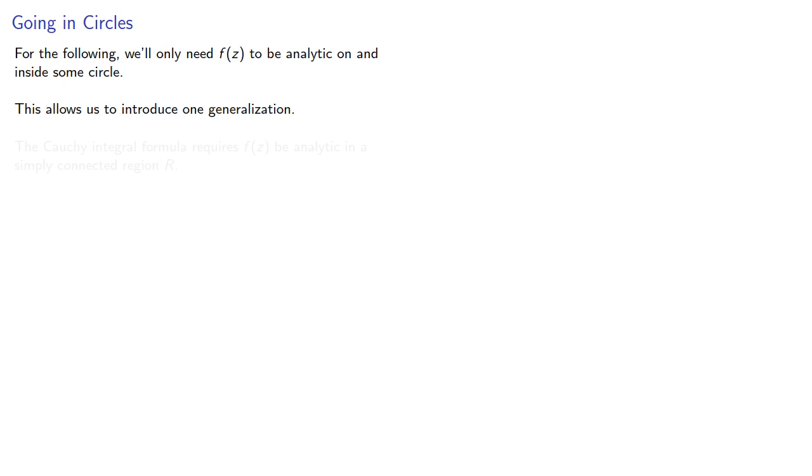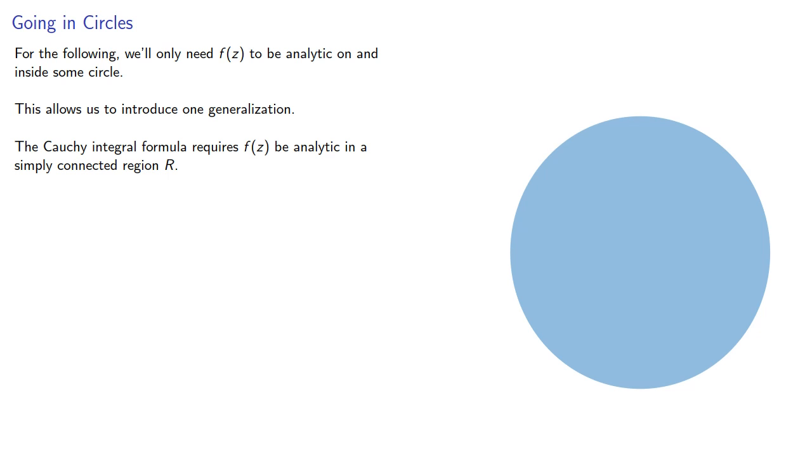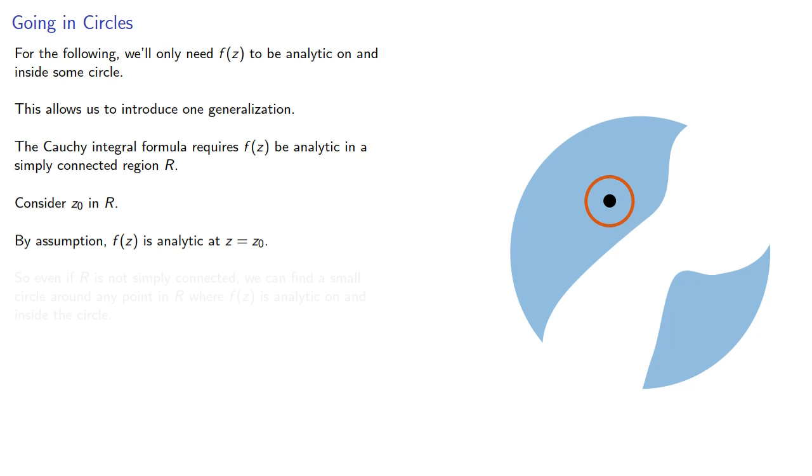The Cauchy integral formula requires f of z to be analytic in a simply connected region r. But now, consider z0 in r. By assumption, our function is analytic at z equal to z0, so even if r is not simply connected, we can find a small circle around any point in r where f of z is analytic on and inside the circle.